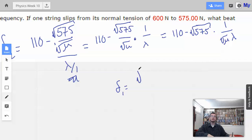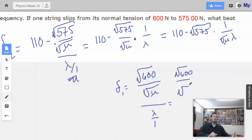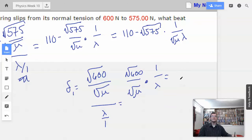So I also know that frequency one equals 110 hertz because that's the one that's not slipped or gone crazy. And that equals square root of 600 over lambda, over the square root of the mass per unit length over lambda.